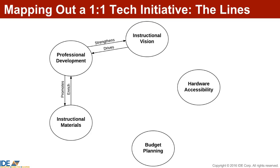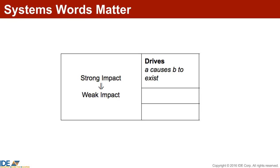The words in a systems diagram carry both meaning and strength of effect. For example, the word 'drive' means that one component causes the other to exist, and it's a strong relationship — so the instructional vision causes professional development to exist. A less strong similar relationship than 'drives' would be 'fuels.' An even weaker relationship would be 'informs,' meaning that A provides data and insights for B to be more effective. But 'informs' is a much weaker relationship than 'drives.' That weakness is not defining the health of the system — it's just that this relationship is not as important as others.